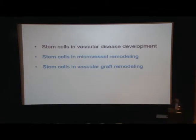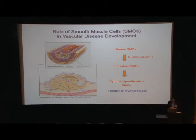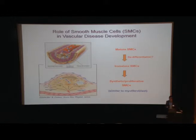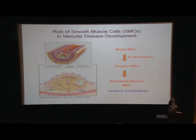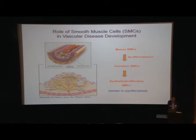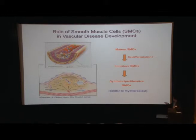The first story is related to the development of vascular disease in atherosclerosis. Traditionally, people have thought that mature smooth muscle cells can differentiate into proliferative and synthetic smooth muscle cells and contribute to the development of atherosclerosis. We ask the question whether really all smooth muscle cells can contribute to this process, since smooth muscle cells in blood vessels are heterogeneous. Is it possible that only immature smooth muscle cells, or even stem cells in the blood vessel wall, contribute significantly to this synthetic and proliferative smooth muscle cell population — cells very similar to myofibroblasts?